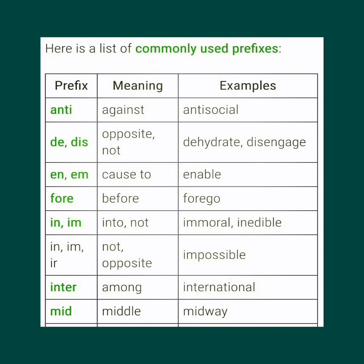Here is a list of commonly used prefixes. Anti- means 'against'; example: antisocial. De- or dis- both have the meaning 'opposite or not'; examples: dehydrate, disengage. En- or em- means 'cause to'; example: enable. Fore- means 'before'; example: forego.